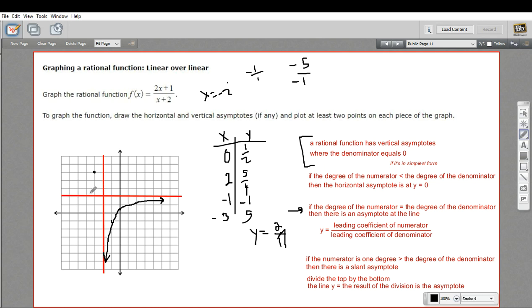And let's do negative 4 as well. So negative 4, 2 times negative 4 would be negative 8 plus 1. That would be negative 7 on top. And negative 4 plus 2 would be negative 2 on the bottom. So that would be a positive 7 halves. So 3 and a half. So negative 4 and 7 halves. 1, 2, 3, 4. And 3 and a half would be here.